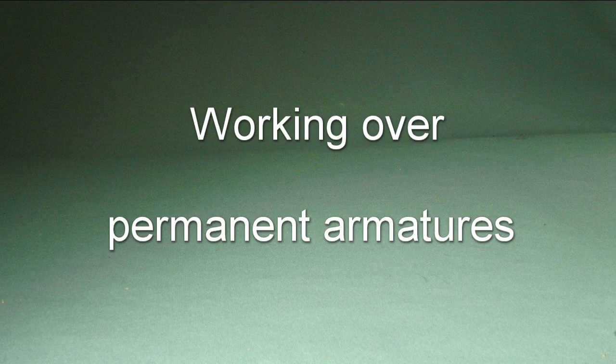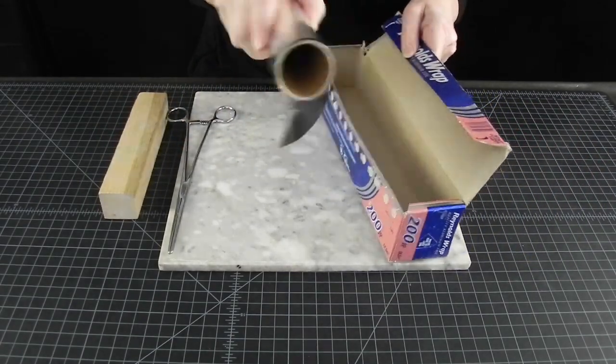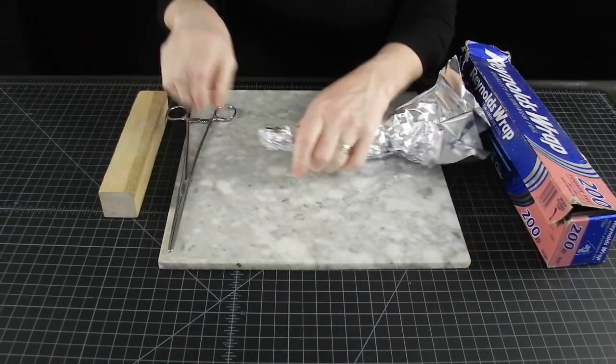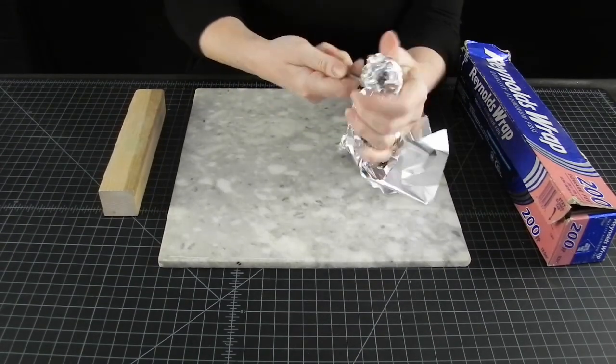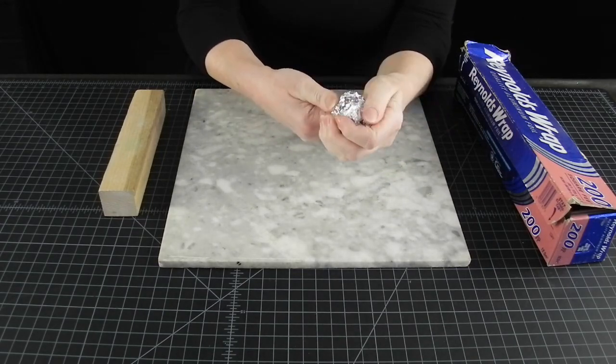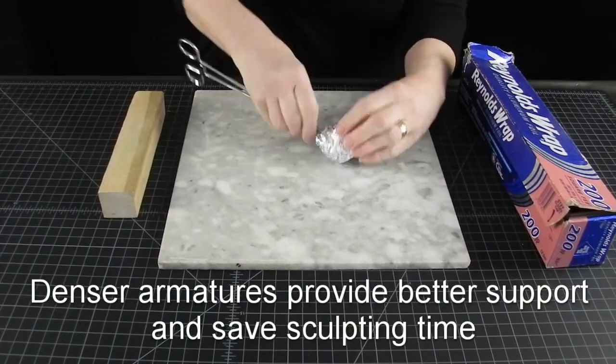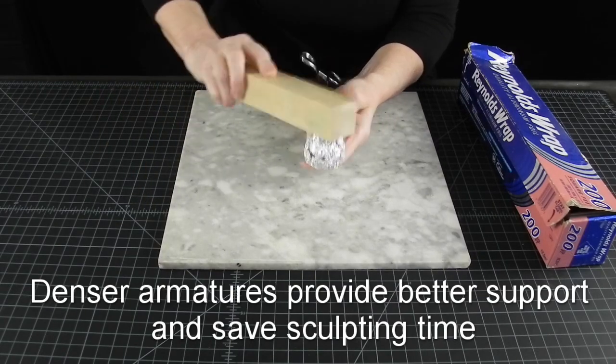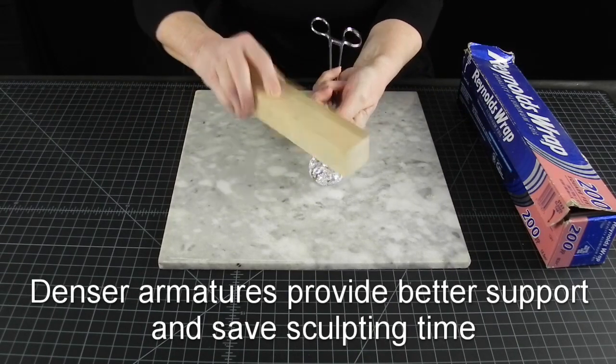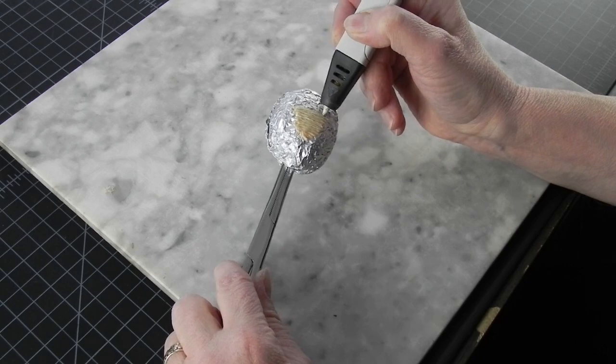Sculptors have been working over armatures for a long time to save material, make the forms lighter, or just to shape things easier. So, if your shape doesn't have to be hollow, you can also work over some material that will ultimately stay inside your sculpture permanently.